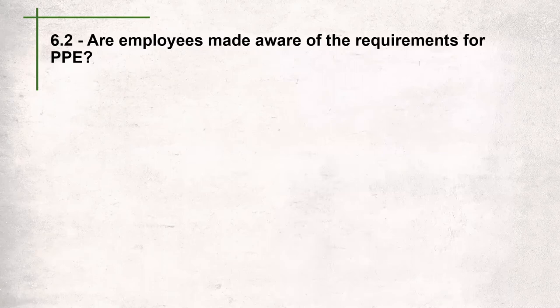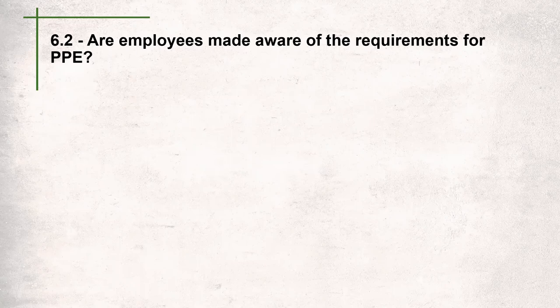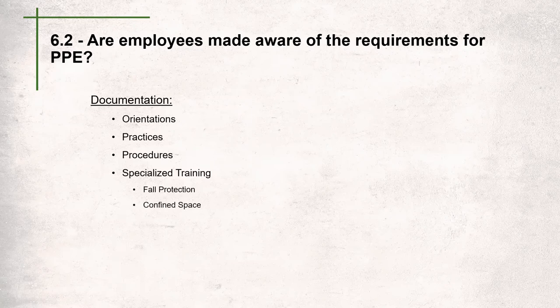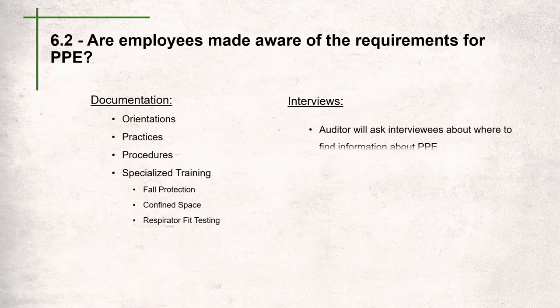Question 6.2 asks: are employees made aware of the requirements for PPE? They can be made aware in a few different ways. Through documentation, the auditor will look through orientations, practices, and procedures. They'll look at specialized training like fall protection, confined space, and respirator fit testing. They will also talk to employees and management to ensure they understand where to find information about PPE. Basic PPE can be included in toolbox talks or safety meetings and may not need a separate training session.